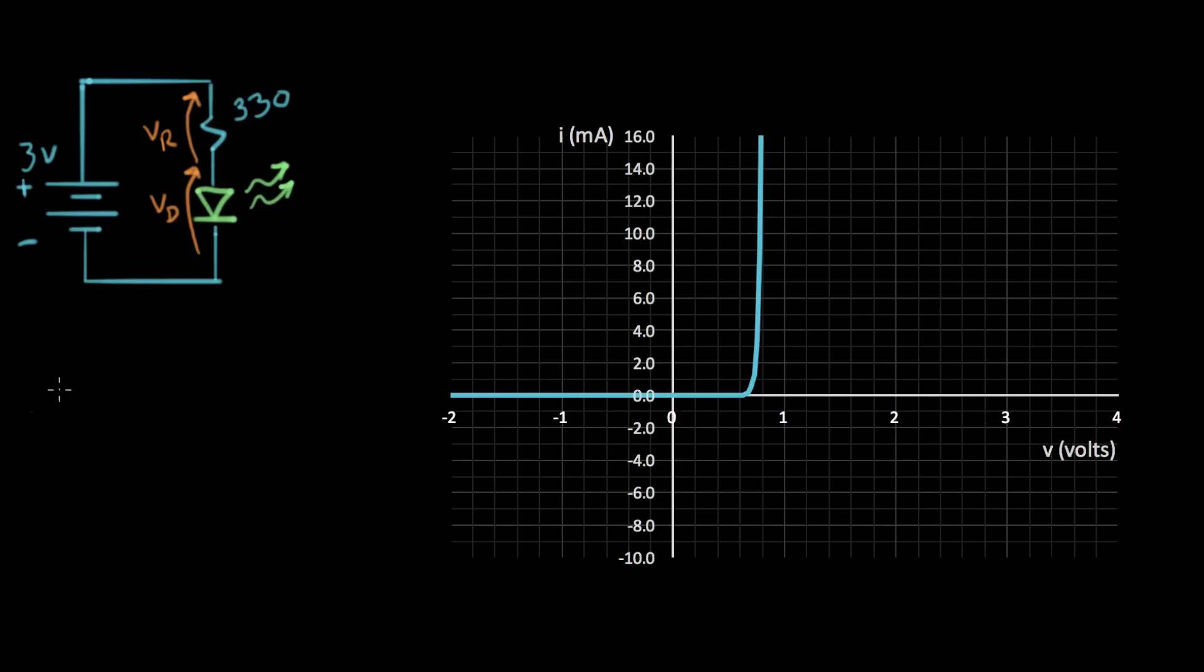So for the diode we write a current law that looks like this: the current is equal to IS times e to the QV on KT minus 1. So that's the IV characteristic for the diode, where this is V diode right there.